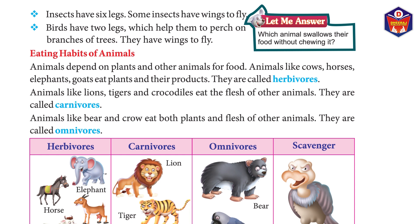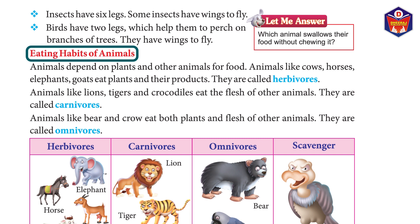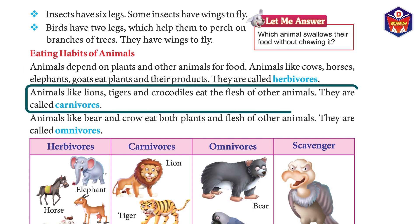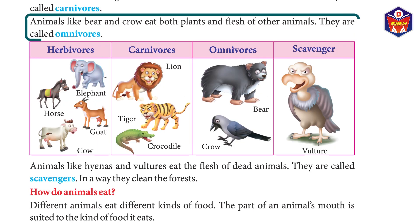Eating habits of animals: animals depend on plants and other animals for food. Animals like cows, horses, elephants, and goats eat plants and their products; they are called herbivores. Animals like lions, tigers, and crocodiles eat the flesh of other animals; they are called carnivores.